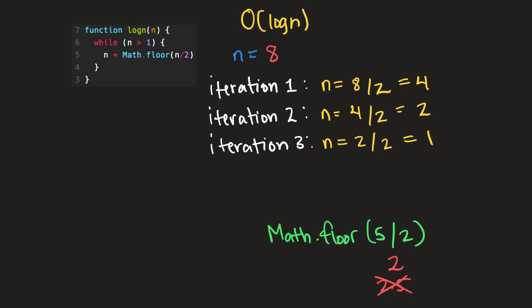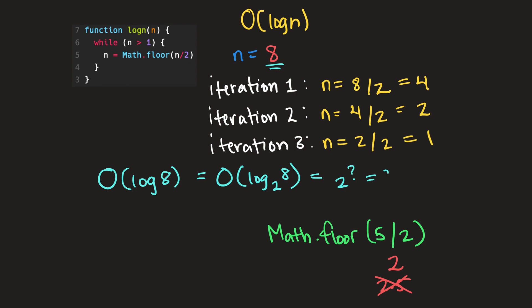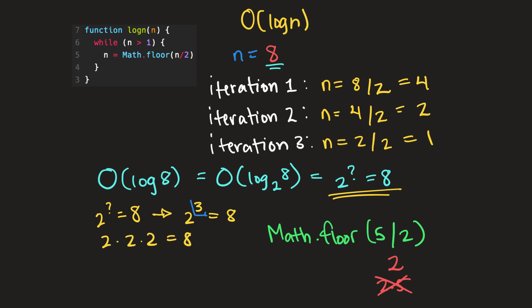So why is this function O of log n? Our n is eight, so that means that this function should be O of log eight. And if you remember from the previous video on O of log n complexity, this is just the same thing as O of log base two of eight, which just means what power do we need to raise two by to get eight. We see that we need to raise two to the third power to get eight, because two times two times two equals eight. So this three is what's important, because division is just the inverse of multiplication. So if we need to multiply two times two times two to get eight, then we should also be able to divide eight by two three times to get one.